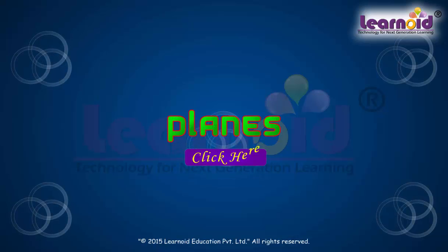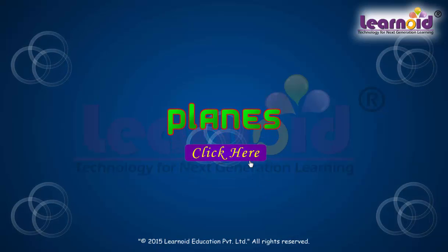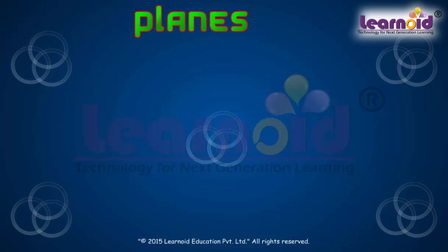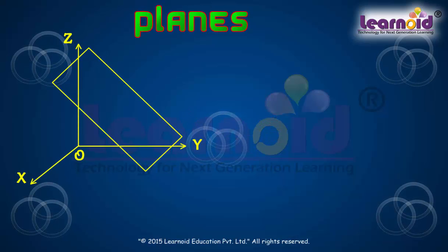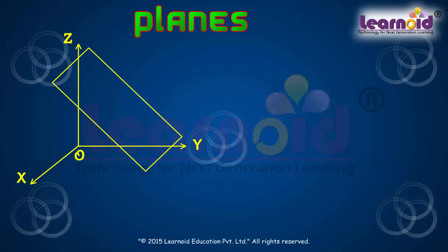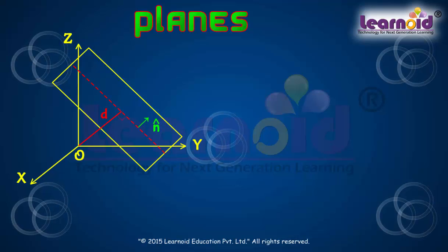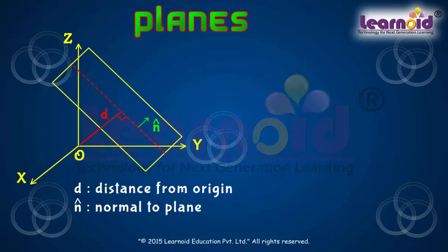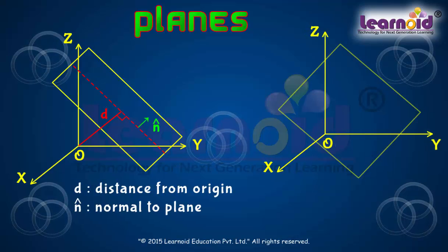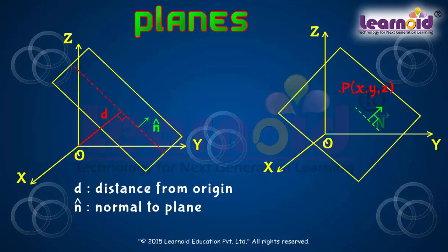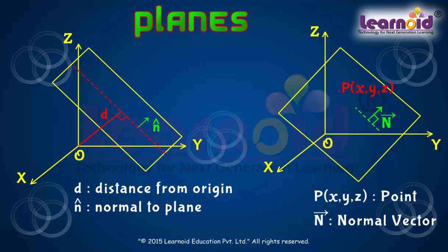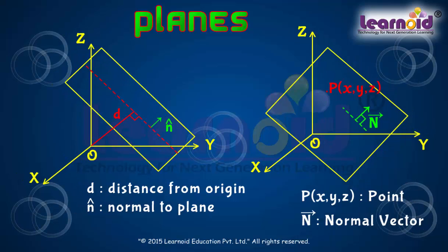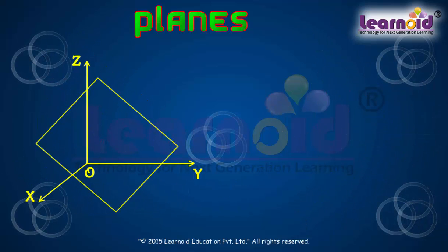Planes. A plane is uniquely identified if any one of the following is known. First, the normal to the plane and its distance from the origin is given. Second, it passes through a point and is perpendicular to a given direction. Third, it passes through three given non-collinear points.